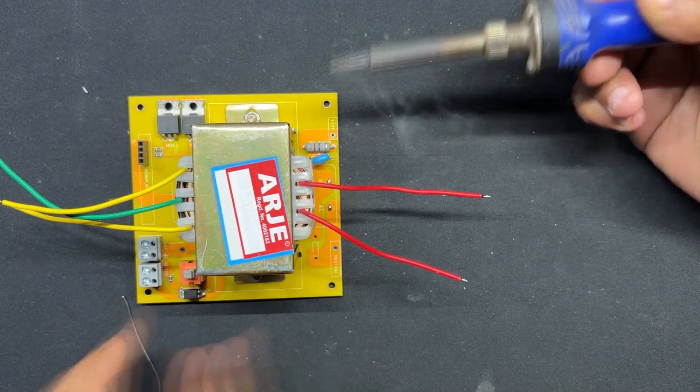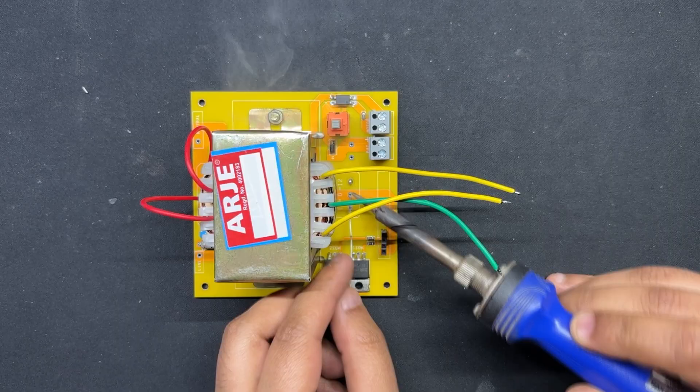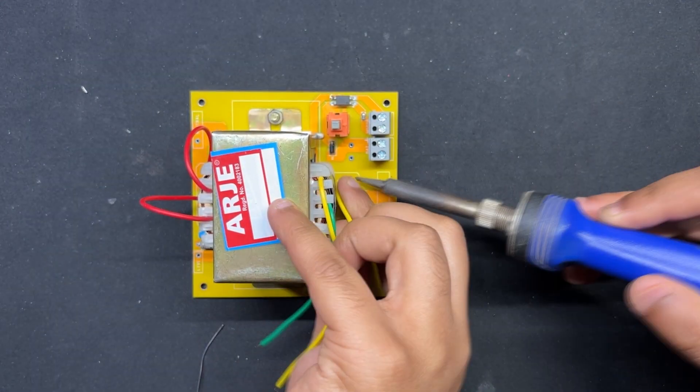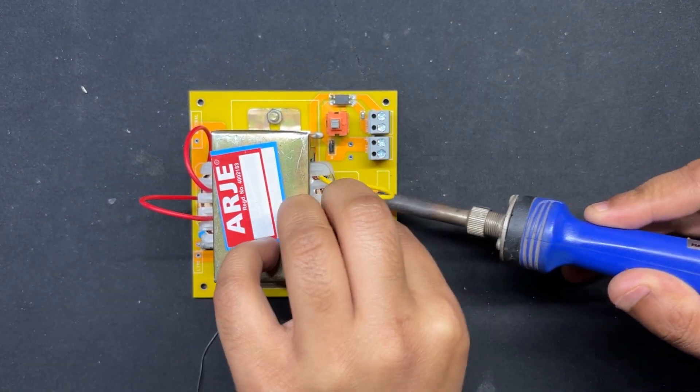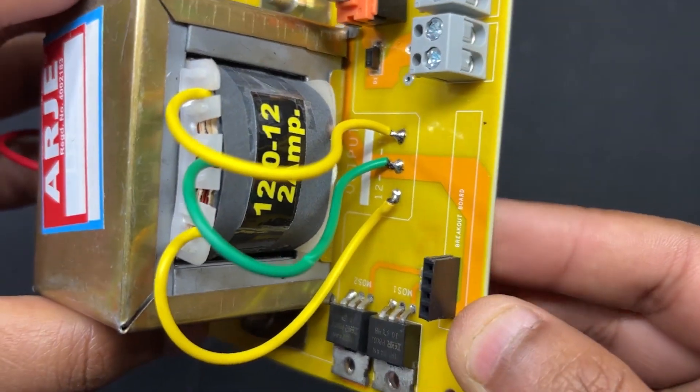Next we connect transformer AC wire to the AC side of the circuit, followed by the DC wires which are connected to the DC side of the circuit. The MOSFET board has been completely assembled.